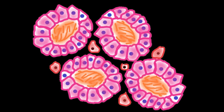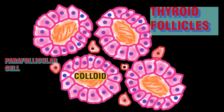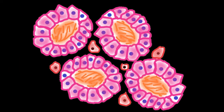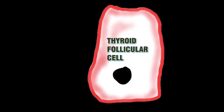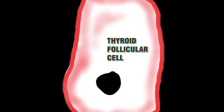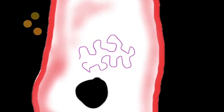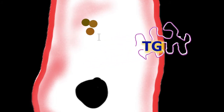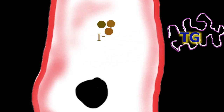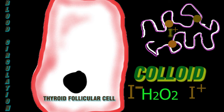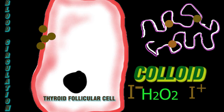Synthesis of thyroid hormones begins with iodine trapping: thyroid follicle cells trap iodine ions by actively transporting them from blood into the cytosol. The thyroid gland contains most of the iodine in the body. Thyroid follicular cells also produce a large glycoprotein called thyroglobulin and release it into the lumen. The trapped iodine also passes through the cell membrane into the follicle lumen, where iodine molecules react with tyrosine amino acids that are part of thyroglobulin.